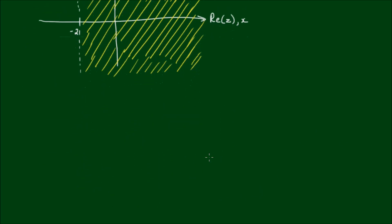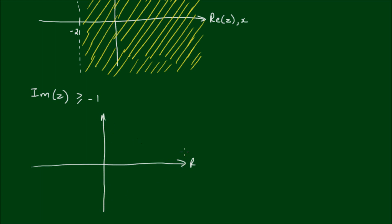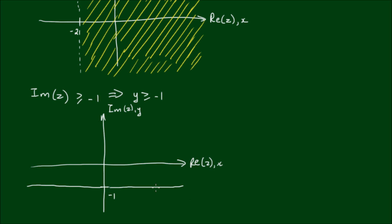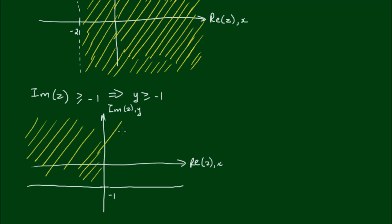Now Example 2: let's say that the imaginary part of z has to be greater than or equal to negative 1. This time there are no constraints on the real part. Drawing another set of axes with the real part horizontal and the imaginary part vertical, negative 1 is placed on the vertical axis. This implies y ≥ -1, so I draw a solid line to show that y can equal negative 1, and the shaded region is everything above this solid line.